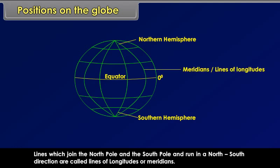Lines which join the north pole and the south pole and run in a north-south direction are called lines of longitudes or meridians.